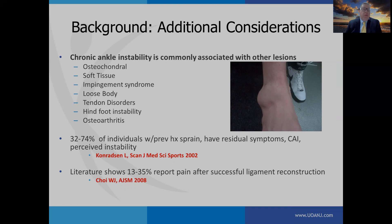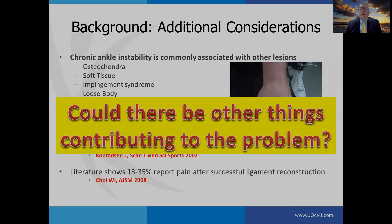In a review done by Conradson, they found that 37 to 74% of individuals with a previous history of sprain had residual symptoms, chronic ankle instability, and perceived instability. Troy reviewed patients who had undergone successful ligament reconstruction and found that 13 to 35% of those patients still had pain after a successful ligament surgery. It leads me to believe that there could be other things contributing to the problem.